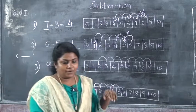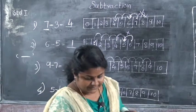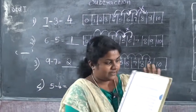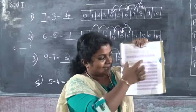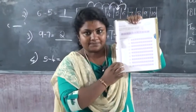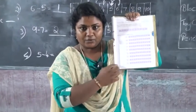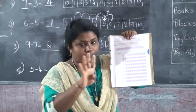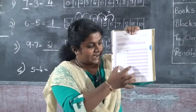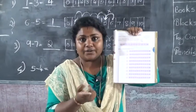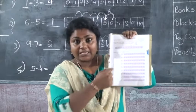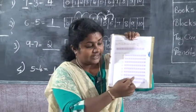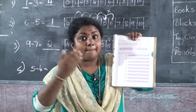In your textbook, on page 87, you can see so many number strips and questions. I have done 4 for you. The balance you have to do in your textbook itself.